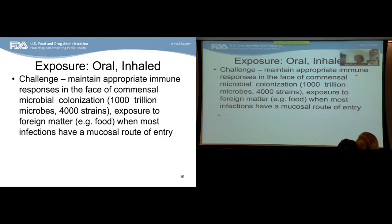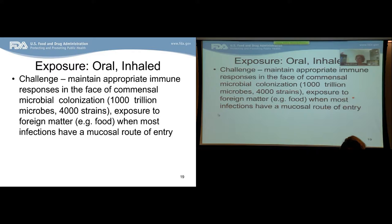The challenge of the mucosal immune system is to maintain appropriate immune responses in the face of enormous commensal microbial colonization — an estimated thousand trillion microbes interfacing with the mucosal immune system, covering about 4,000 different strains. In addition to commensal microbial exposure, there is exposure to foreign matter such as food and inhaled particulates. The mucosal immune system must deal with these relatively benign exposures while also handling the fact that most infections have a mucosal route of entry.